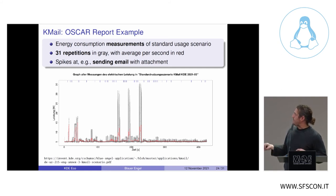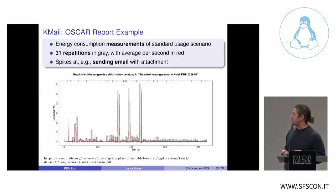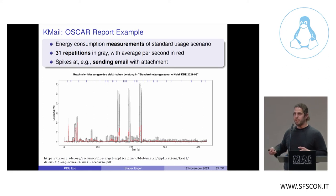Each gray line represents, at each second, an average over a thousand measurements with the Janitza power meter. Looking at this, you can see the power consumption over time — and for example at the point of sending an email, you can see the power consumption spike upward.